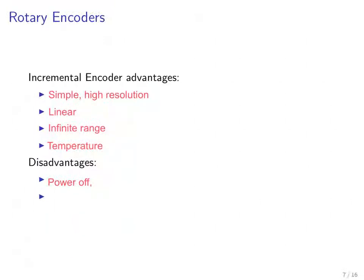One disadvantage is that if you turn the power off, then your absolute position is lost. You lose the absolute position because you don't know where you started. That will be in contrast to the absolute optical encoder. Also, if an error occurs, if you somehow miss one of the transitions, all accuracy is lost. All subsequent measurements will be off by that amount.